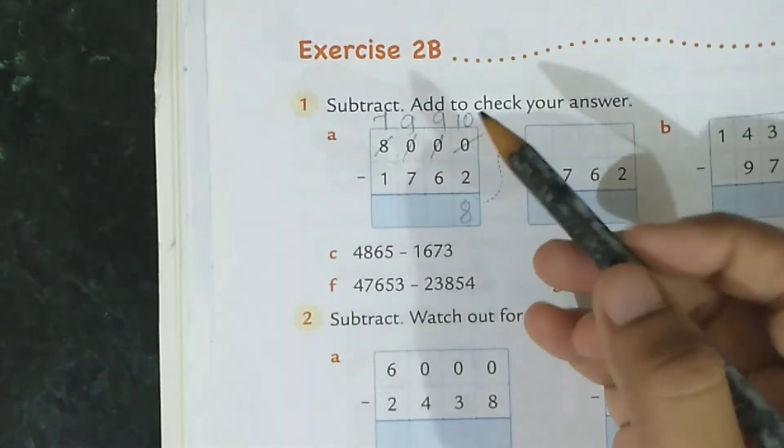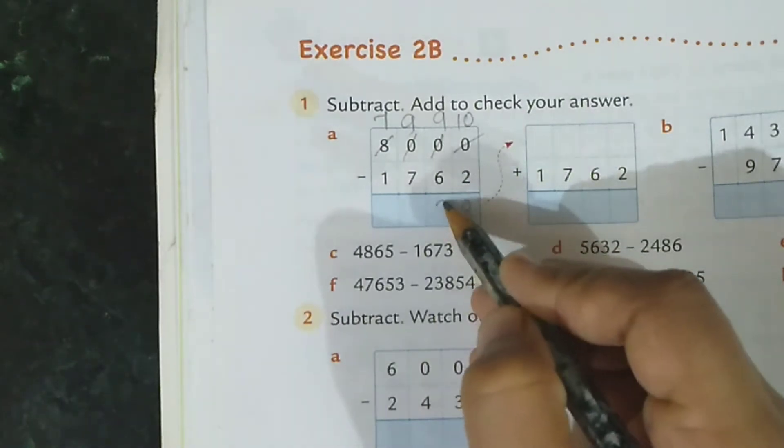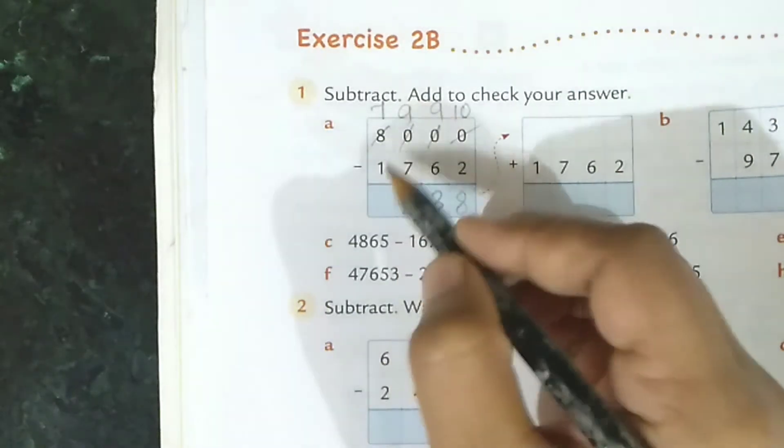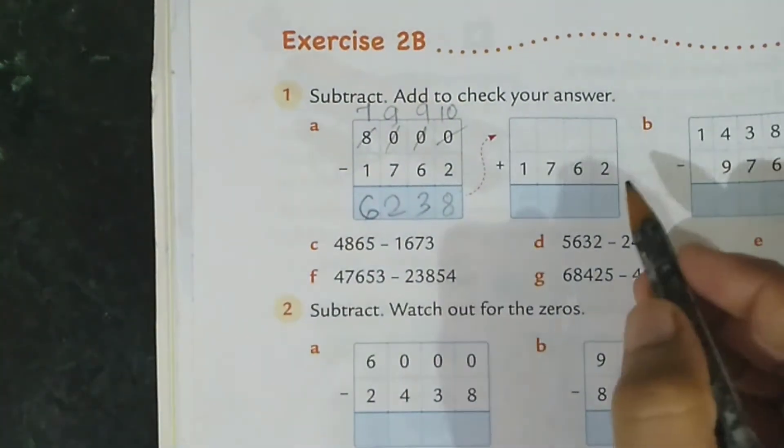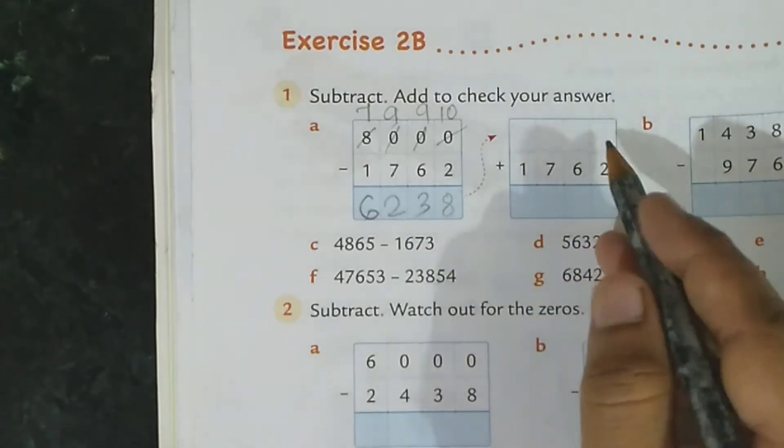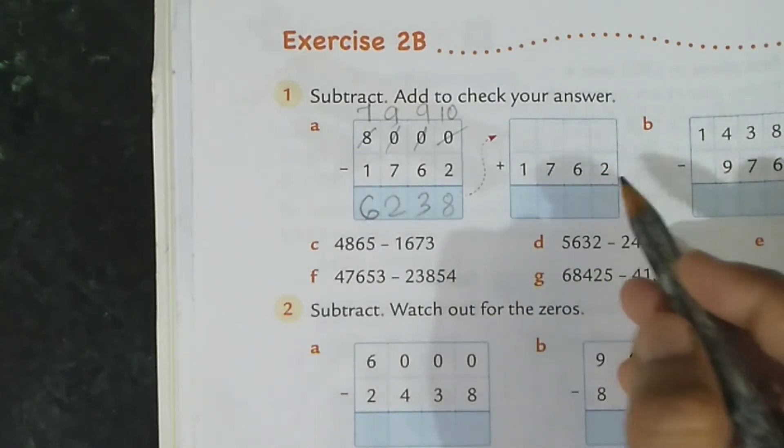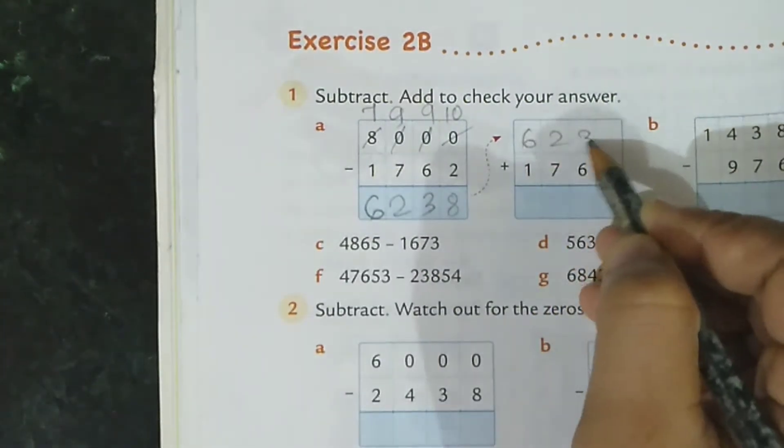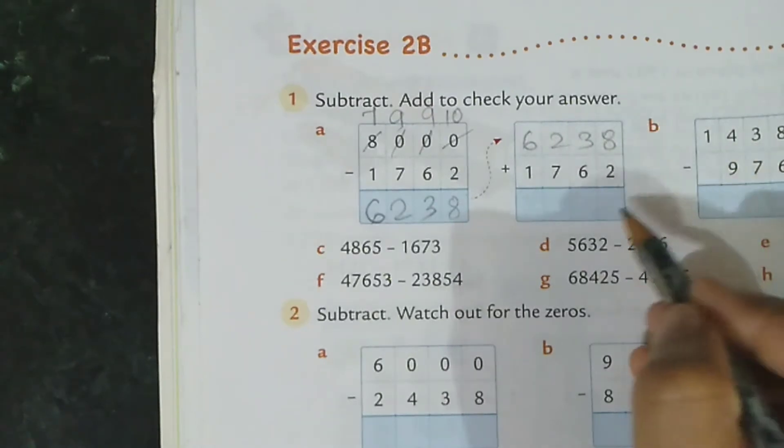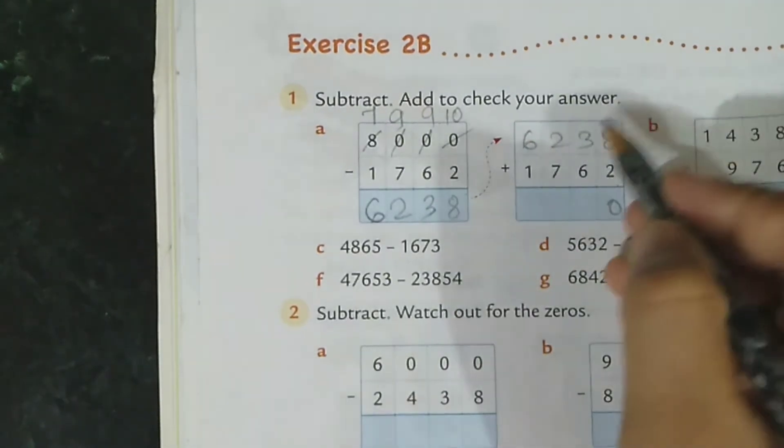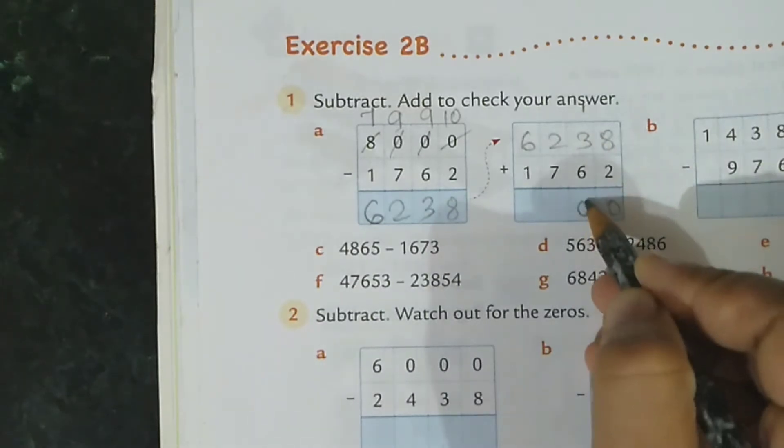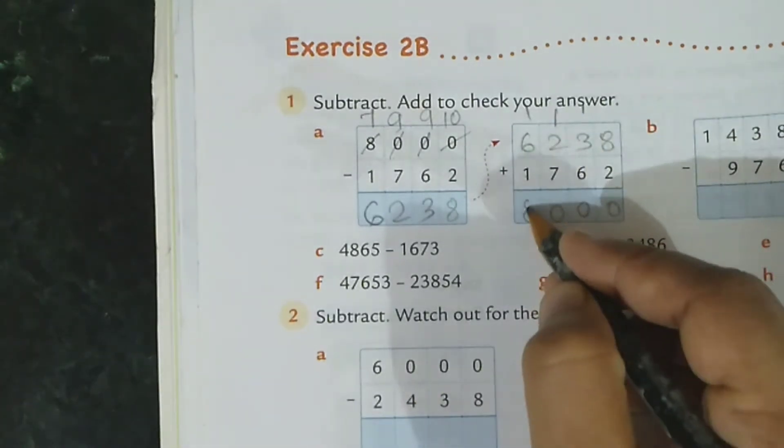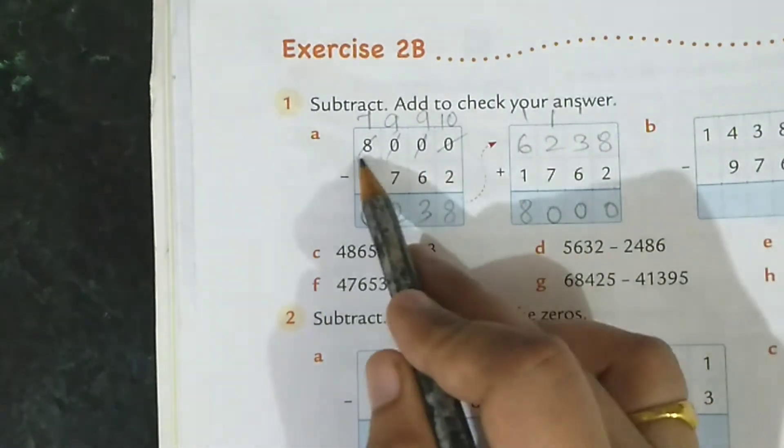Now it is really very necessary to check your answer by adding. Your answer is 6238. So let's add 8 plus 2, 10, 0, 1 carry. 3 plus 6, 9, plus 1, 10, 0, 1 carry. 2 plus 7, 9 plus 1, 10, 0, 1 carry. 1 plus 6, 7 plus 1, 8. See? You get minuend.